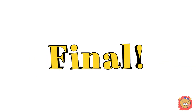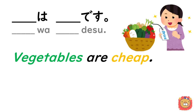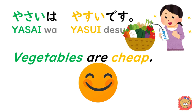This is the final practice. Let's say 'vegetables are cheap' in Japanese. Are you ready? 野菜は 安いです. That's it.